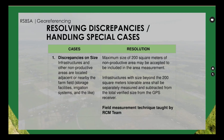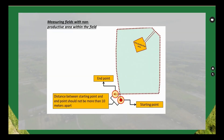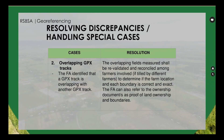Infrastructures with size beyond the 200 square meters tolerable area shall be separately measured and subtracted from the total verified size from the GPS receiver, using the field measurement technique taught by the RCM team for measuring fields with non-productive areas within the field. See the excluded non-productive area during measurement.